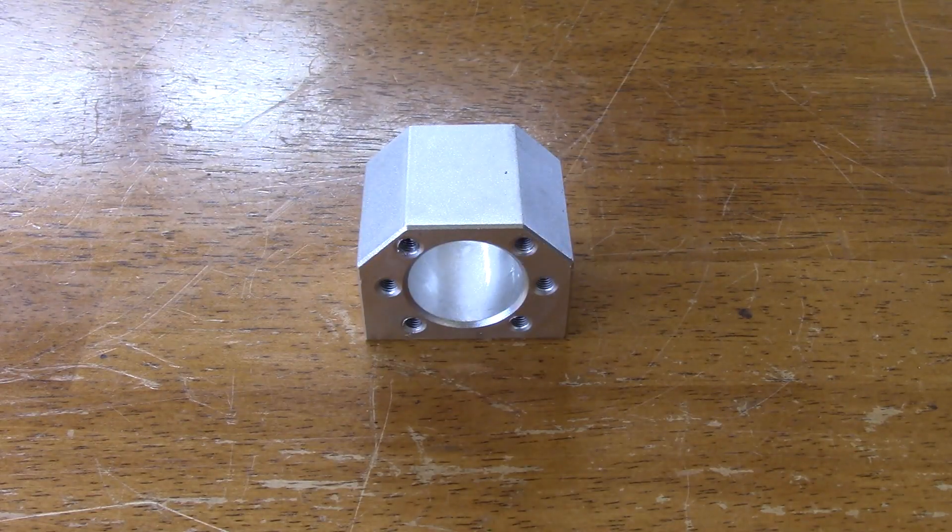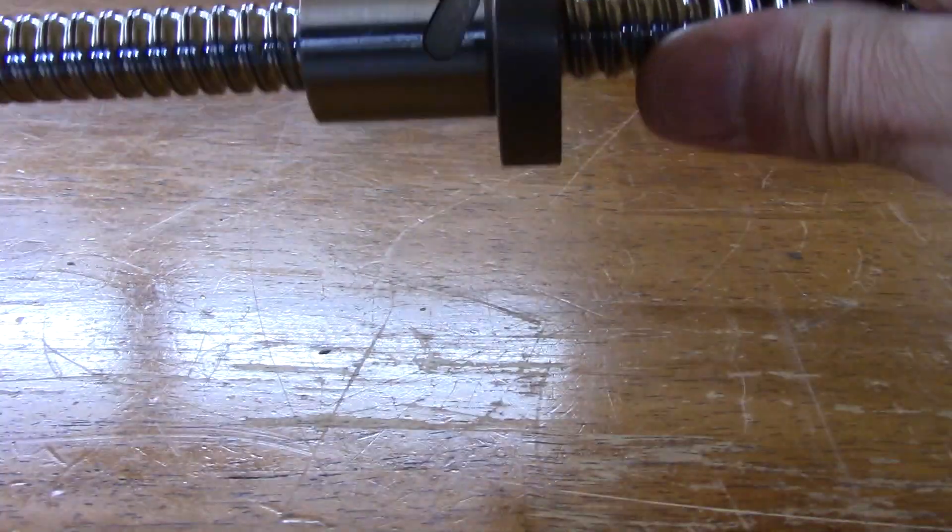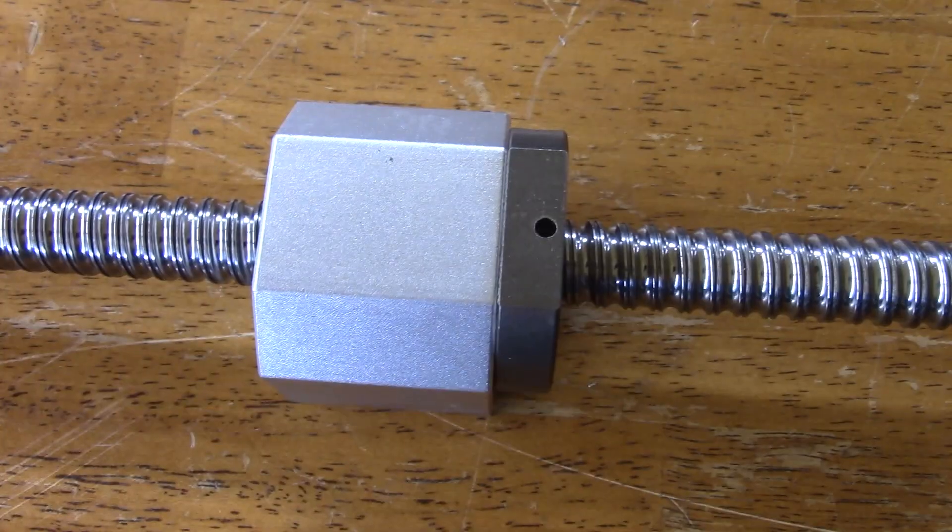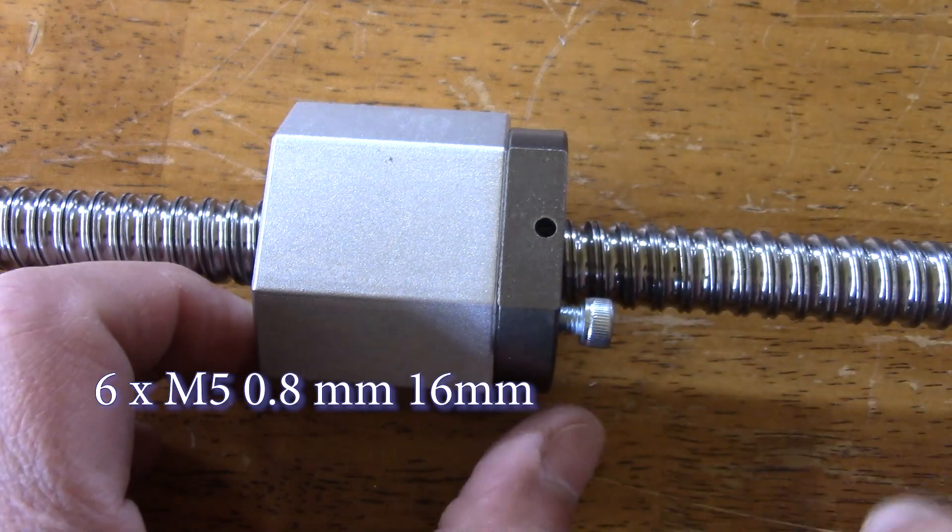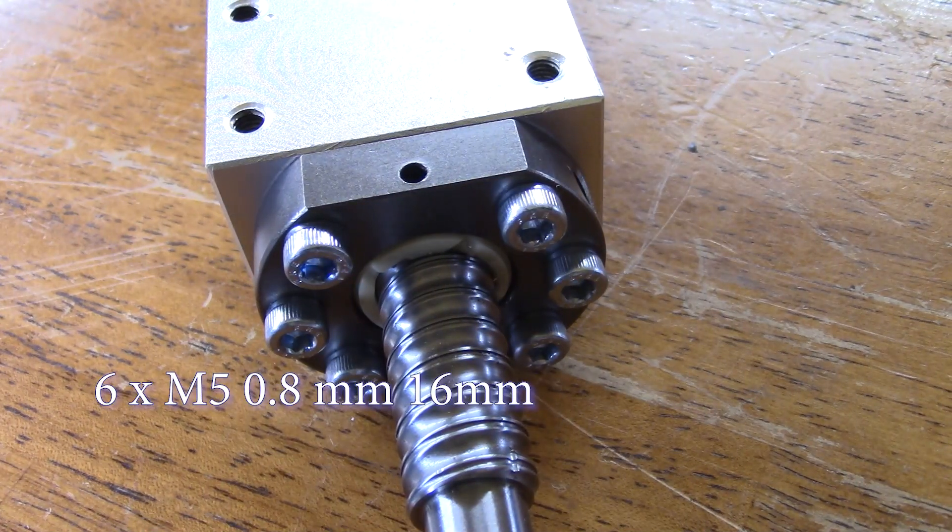First item you will want to assemble is the bolt screw nut block. For this purpose, six M5 0.8 16mm screws were employed.